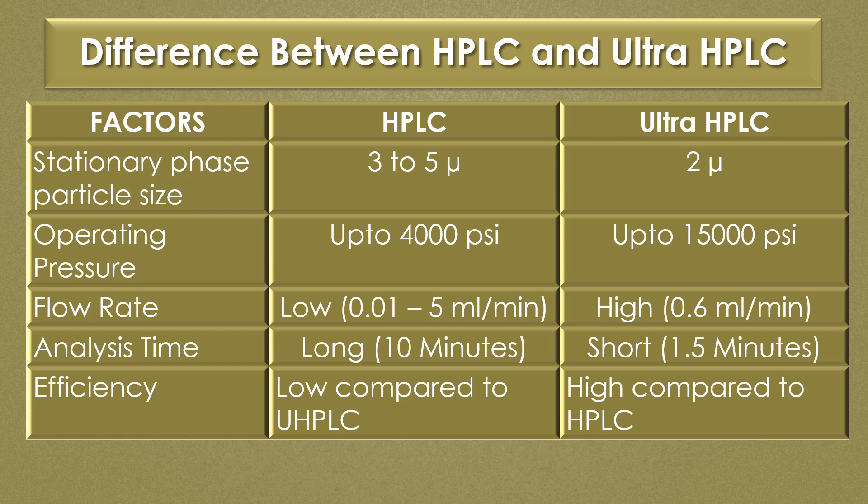The operating pressure of Ultra HPLC is up to 15,000 psi. The flow rate of HPLC is low, ranging from 0.01 to 5 ml per minute, and the flow rate of Ultra HPLC is high, ranging from 0.6 ml per minute.